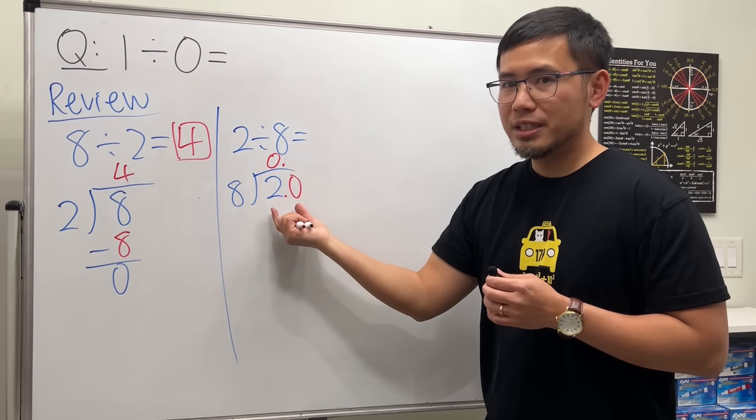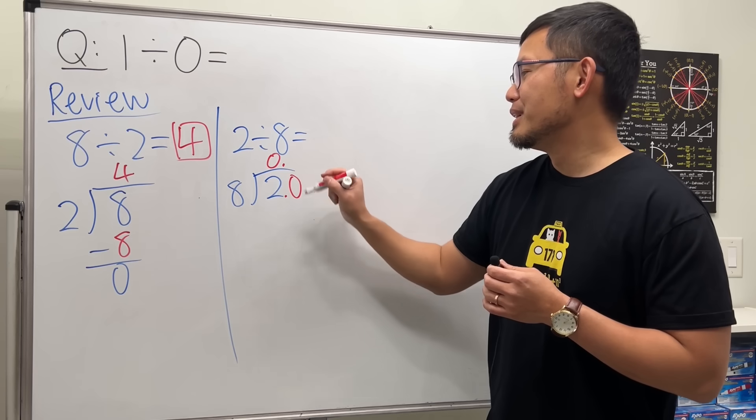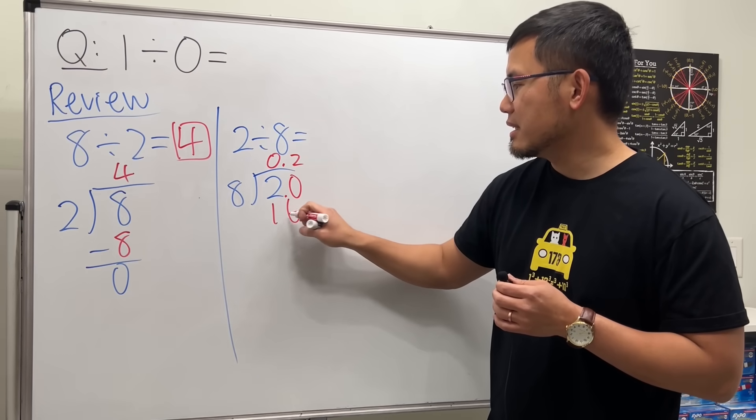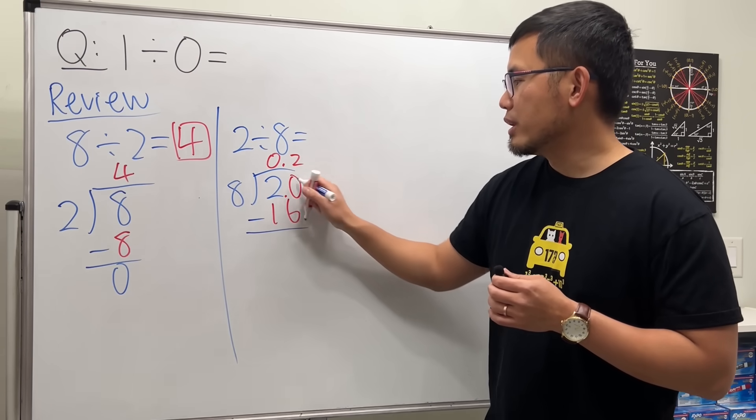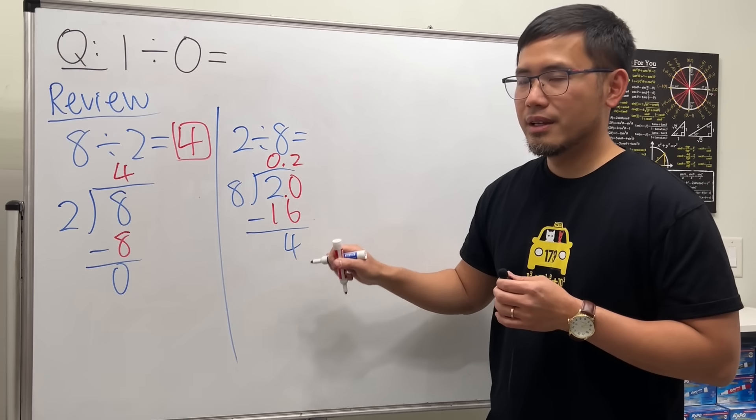8 goes into 20 how many times? 2 times, because 2 times 8 is 16. You subtract. 20 minus 16 is 4. Can we continue? Yes, because this is a 4.